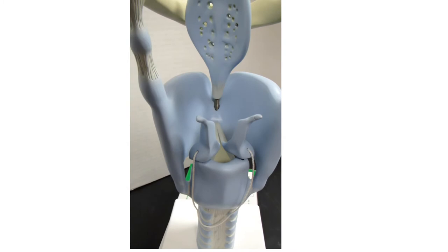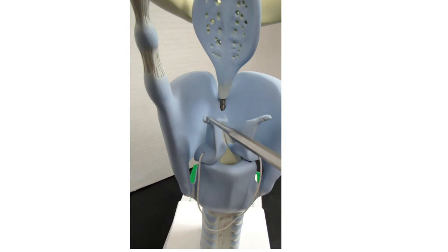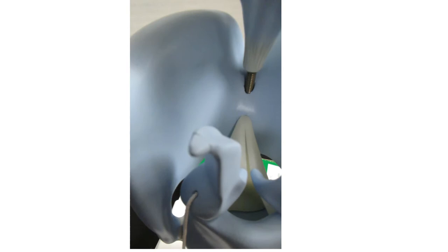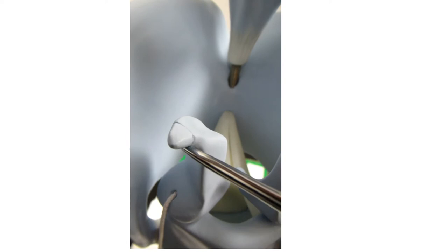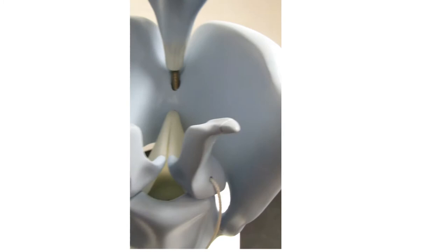These are referred to as the arytenoid cartilages—we have one and two. These structures over here that sit on top of them, let me get a little closer for you, look a little bit like bird claws. You have one over here and one on the other side. These are referred to as the corniculate cartilages.